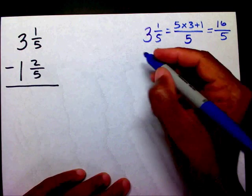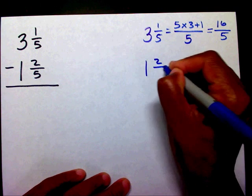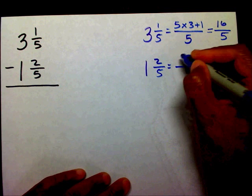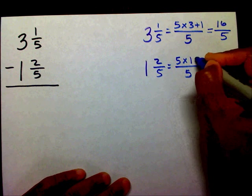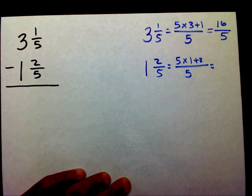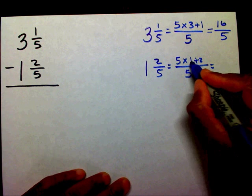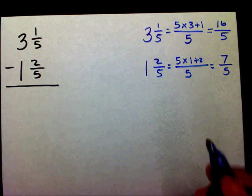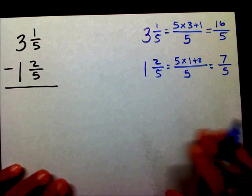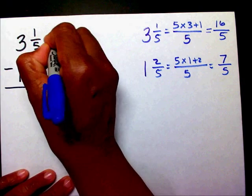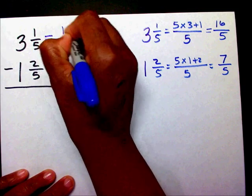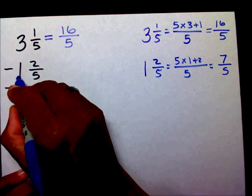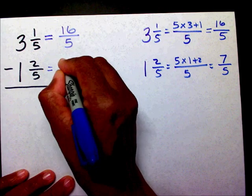So I just renamed three and one-fifths to sixteen-fifths. Now I'm going to rename one and two-fifths. I'm going to keep my denominator five. Five times one plus two — five times one is five, plus two is seven. So I've just changed this one and two-fifths into seven-fifths.